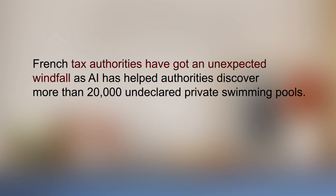French tax authorities have got an unexpected windfall as AI has helped authorities discover more than 20,000 undeclared private swimming pools. Does this sentence talk about objects or people? Well, it talks about both. And in order to identify the main idea, it is important to check whether we are familiar with unknown words. When you find an unfamiliar word, don't reach for a dictionary immediately. Try to guess what it could mean from the context. Take this phrase: tax authorities have caught an unexpected windfall. What could 'windfall' mean?